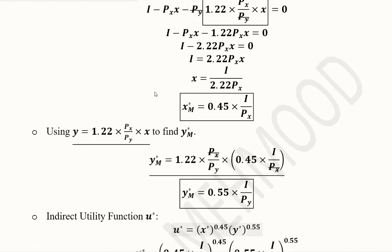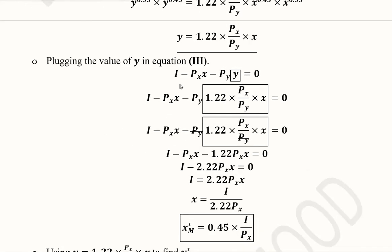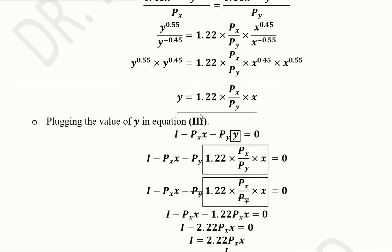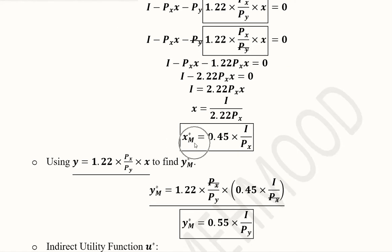Now we find out the Marshallian demand function for the other good, Y. For that I recall the Y equation developed by solving the first and second first order conditions, where I found the value of Y in terms of X. Now that I have the value of X, I can substitute it to get the value of Y.